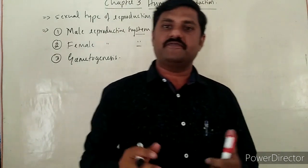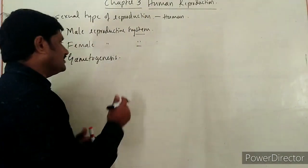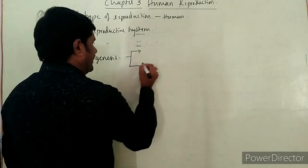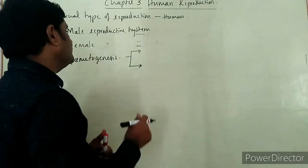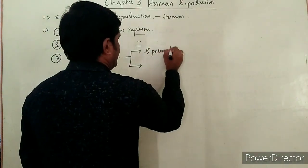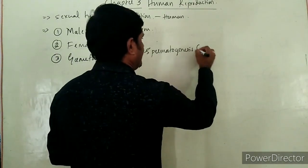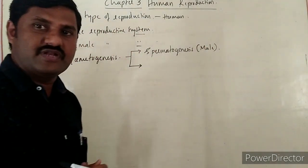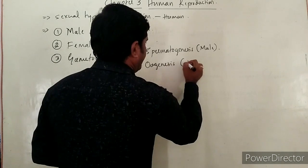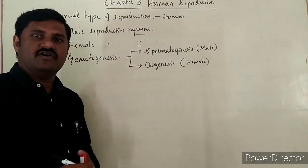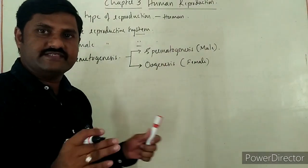Gametogenesis is the process of formation of gametes in respective male as well as female gonads. In males, one gamete is formed called a sperm, and the process of production of sperm is called Spermatogenesis — occurring in the male gonads, that is the testes. The second type is Oogenesis, which is the process of formation of ovum or egg cell in the ovary, occurring in females.